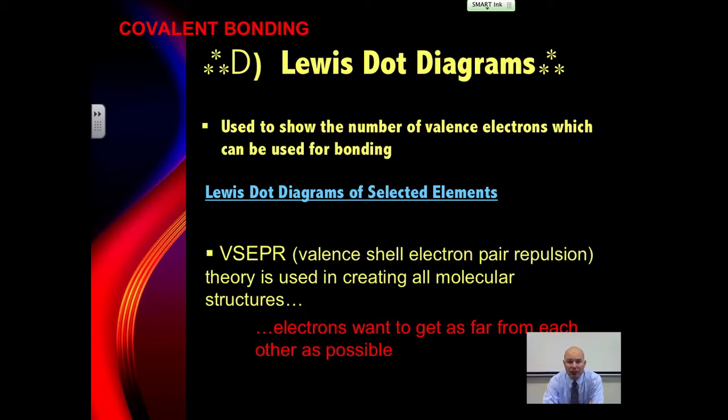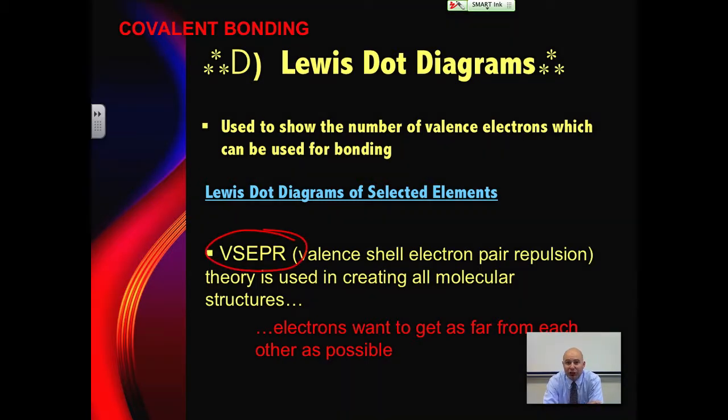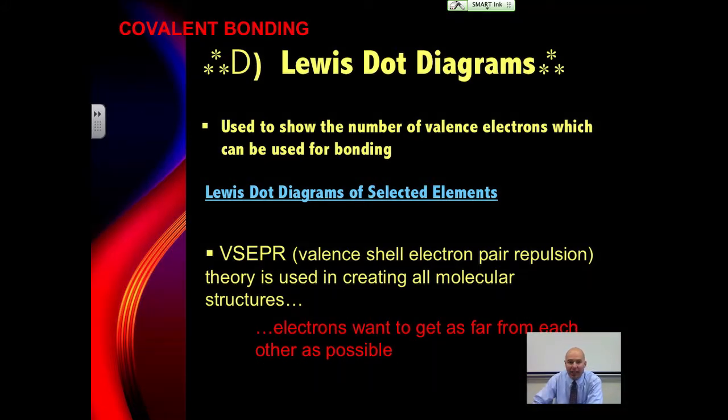The last thing we talked about was the VSEPR theory, which stands for valence shell electron pair repulsion theory. It defines our geometry and tells us that electrons want to get as far apart from each other as possible. So let's take a look at what that means and how that works.